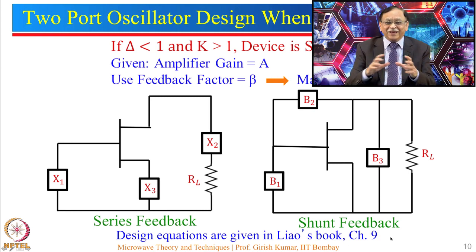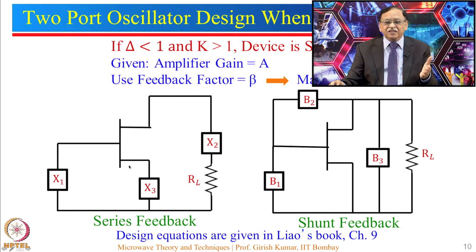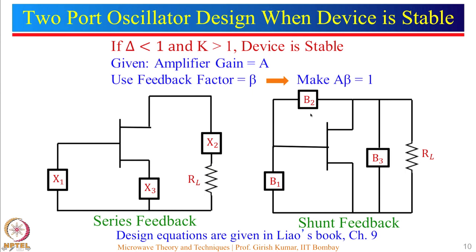The design equations for both these circuits are given in Leo's book, Chapter 9, so I have not reproduced them in my slides. Please refer to that book for the expressions for X1, X2, X3 and B1, B2, B3. I will describe the steps: the S-parameters of the device are known, they are converted to Z-parameters, and since the elements are in series, Z-parameters get added. One finds the equivalent Z-parameters of the entire network, then converts back to S-parameters.